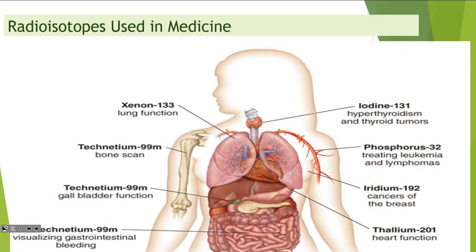These are some of the things we use in medicine — different isotopes go to different places. Xenon-133 is for lung function. Technetium-99 is used for bone scans, gallbladder function, and gastrointestinal bleeding. Iodine is used for your thyroid. Phosphorus is to treat leukemias and lymphomas. Iridium-192 for cancers of the breast, and thallium-201 for heart function.